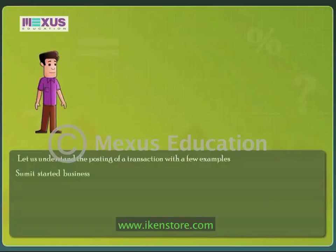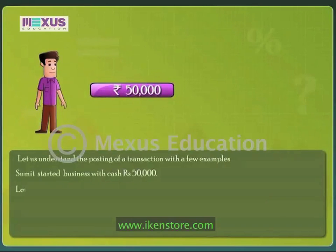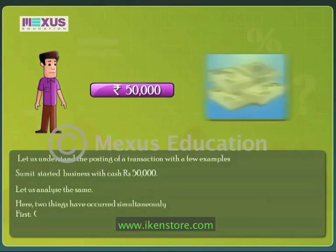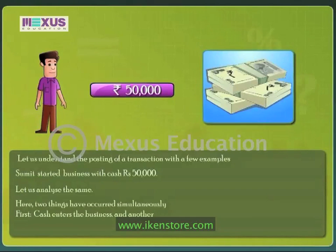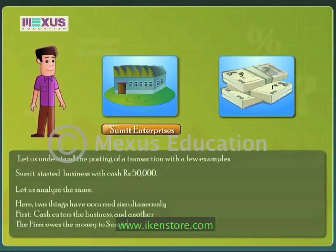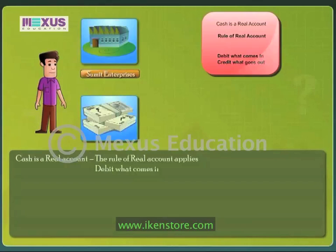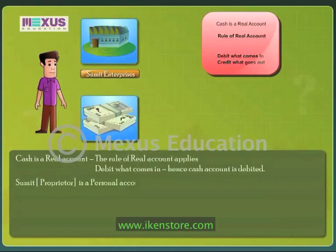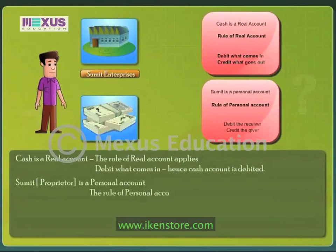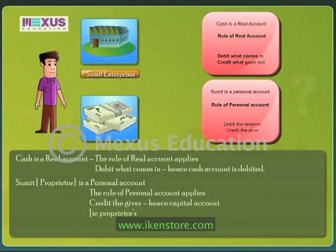Let us understand the posting of a transaction with a few examples. Sumit started business with 50,000 rupees cash. Two things occurred simultaneously: cash entered the business, and the firm owes the money to Sumit, the proprietor. As cash is a real account, the rule of real account applies — Debit what comes in — hence cash account is debited. Sumit, the proprietor, is a personal account, so the rule of personal account applies — Credit the giver — hence capital account is credited.